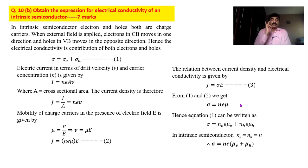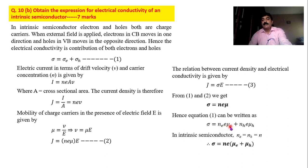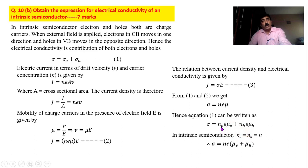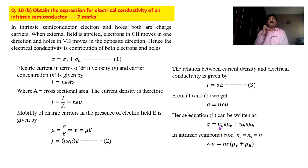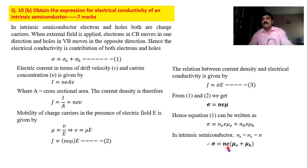Since there are two types of charge carriers, there must be two types of conductivities: sigma-e and sigma-h. Therefore sigma equals n-e·e·mu-e plus n-h·e·mu-h, where n-e is the number of electrons, mu-e is the mobility of electrons, n-h is the number of holes, and mu-h is the mobility of holes. In an intrinsic semiconductor, n-e equals n-h, so we take n as common. The final expression is sigma equals n·e·(mu-e plus mu-h).